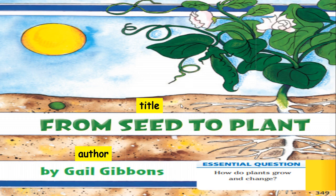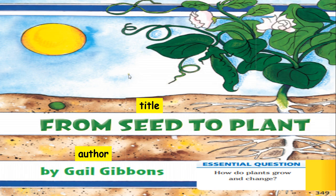So the first thing you'll see once you open page 349, you'll see this beautiful blue sky, this beautiful yellow sun, and we have here a plant which has flowers and peas and in the ground it has roots. You'll see the title of our text, From Seed to Plant, and the author Gail Gibbons. We have a question: How do plants grow and change? We all know plants need some care and they need food to grow. Most plants need sunlight, water, and air to grow.